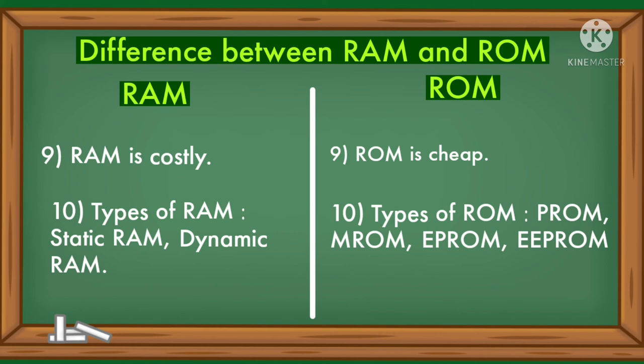Types of RAM: Static RAM and Dynamic RAM. Types of ROM: PROM, EPROM, and EEPROM.